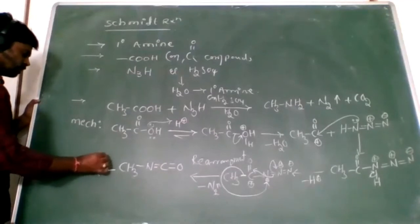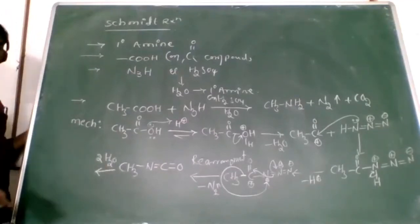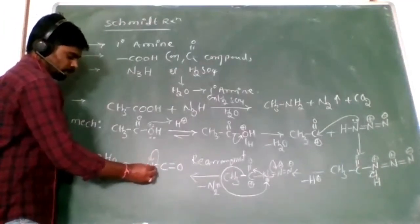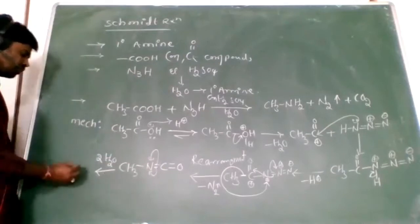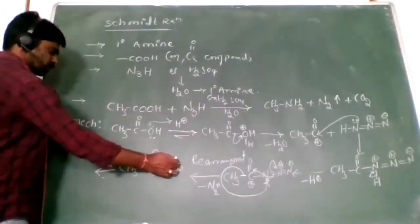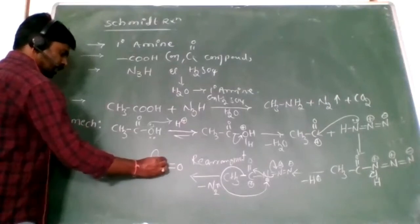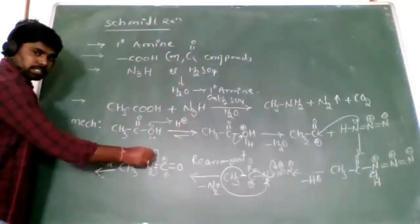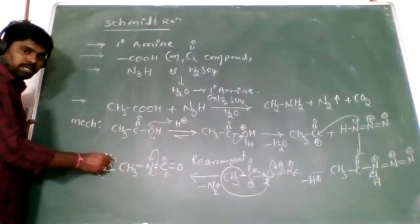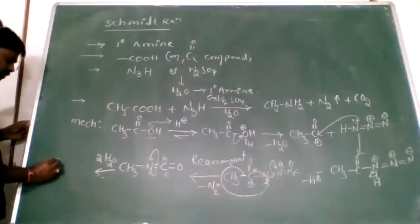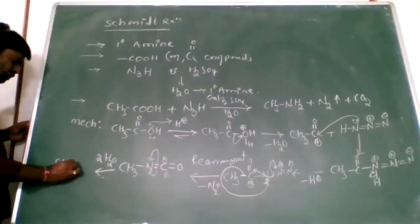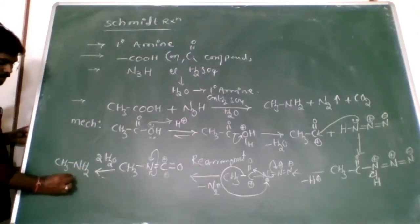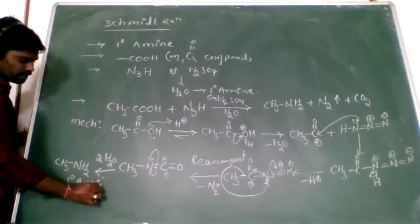Now going to hydrolysis. For balancing, we take two moles of water molecule. The bond electrons shift into the nitrogen side. We get CH₃NH⁻, which takes H from water, giving CH₃NH₂. This is a primary amine — methylamine.